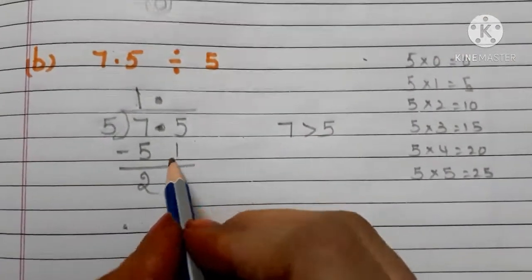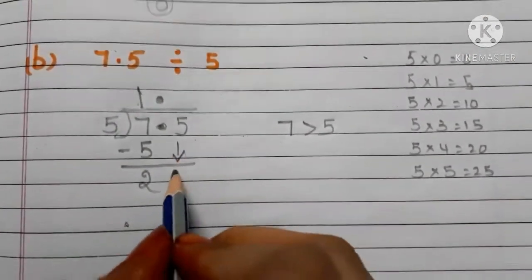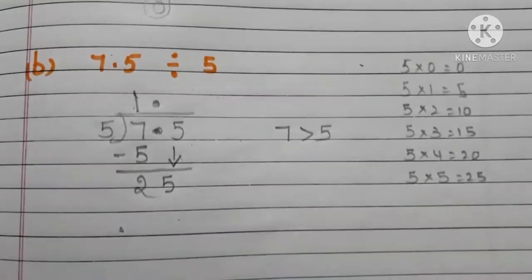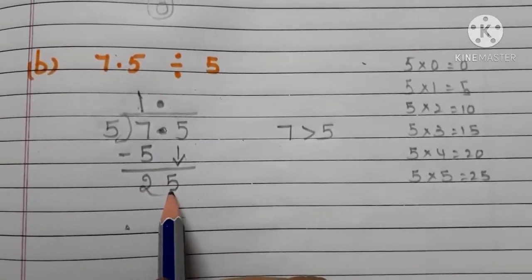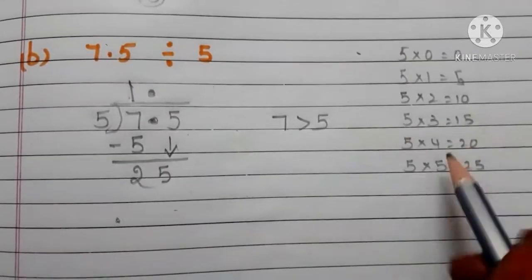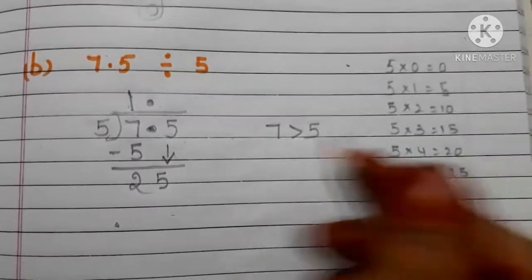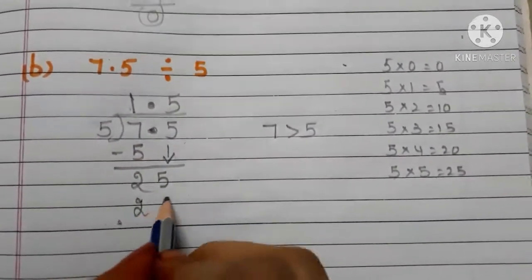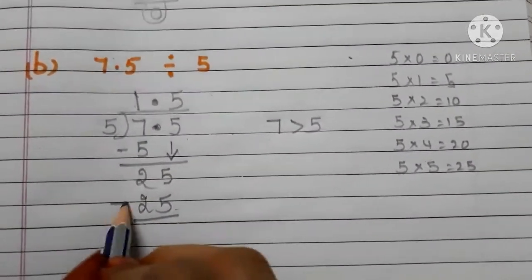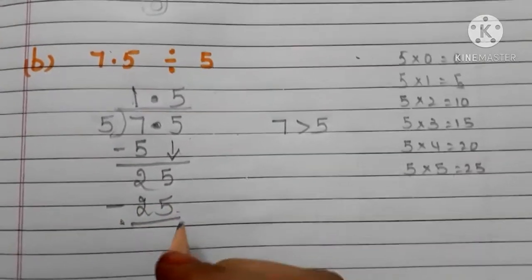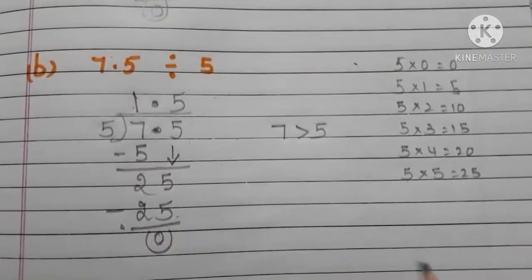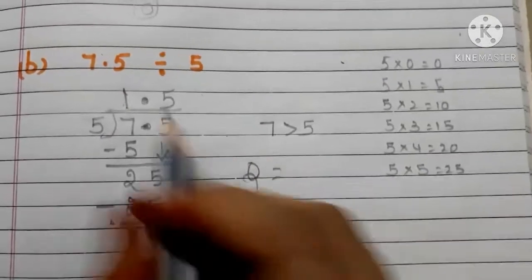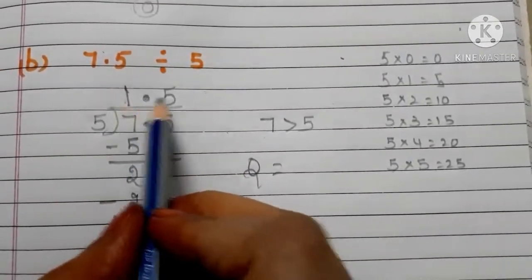Now we bring down the number 5. Here we do not need to write the decimal point again. Now we have 25. Five 5s are 25, so write 5 in the quotient and 25 below. 25 minus 25 is 0. The quotient is 1.5.